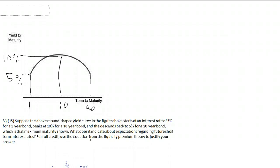It mentions that you're supposed to use the equation from the liquidity premium theory to justify your answer. We're going to do that, but since the equation from the liquidity premium theory is very close to the equation from the expectations theory, and since the expectations theory formula is a little bit simpler, we're going to start with the expectations theory formula. The expectations theory formula is formula number 2 on page 129, and the liquidity premium formula is formula number 3 on page 132. We're going to be working with formula 2 for most of the time, and then we'll move forward later on.